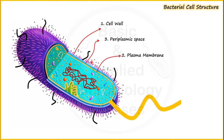The plasma membrane shown here in yellowish color has been infolded — we can say this is an extension or invagination of the plasma membrane — and this forms a structure in bacteria called the mesosome. The plasma membrane surrounds a gel-like matrix which we call the cytoplasm.